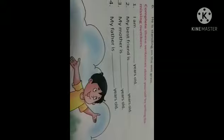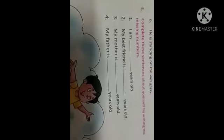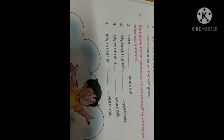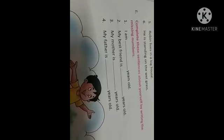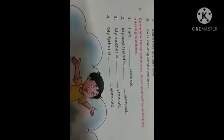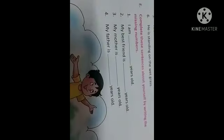Last exercise is, complete these sentences about yourself by writing missing numbers. I am dash years old. You have to take your parents' help for this and fill it. Thank you.